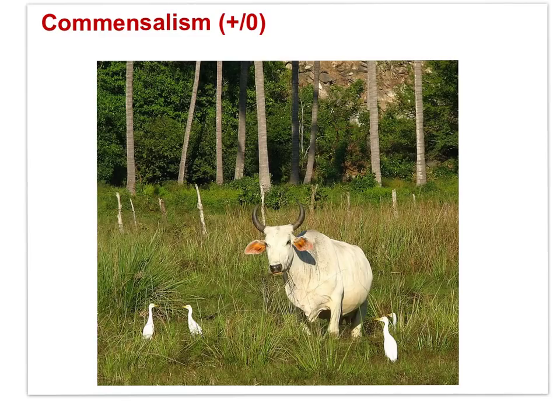Commensalism is a plus-zero relationship where one species gains from the presence of the other, but the second species is neither harmed nor helped. In this photograph, egrets easily find food as the cow moves through the environment, kicking up insects. The cow gains nothing from the relationship. And that brings our analysis of symbiotic relationships to an end.